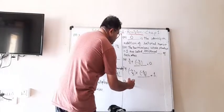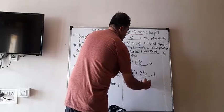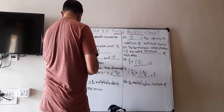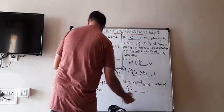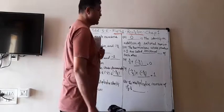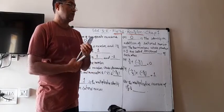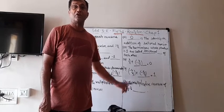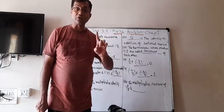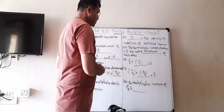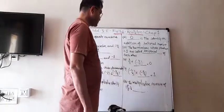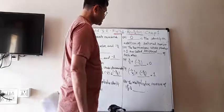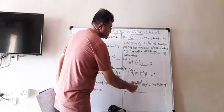Number 20. The multiplicative inverse of the multiplicative inverse of 1 integer 2 upon 8 is blank. Sometimes students make a mistake here — they only switch the 8 and 2 and write 1 integer 8 upon 2. But it is not like that. First we have to convert the mixed number to an improper fraction: 8 times 1 is 8, plus 2 is 10, so it becomes 10 upon 8. Then the multiplicative inverse is 8 upon 10. So the answer is 8 upon 10.